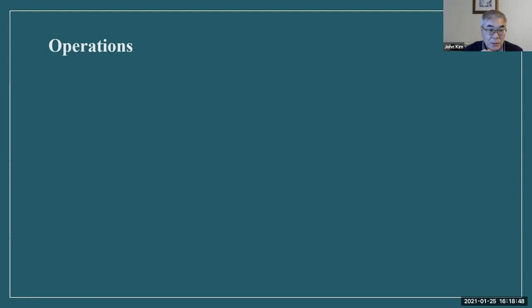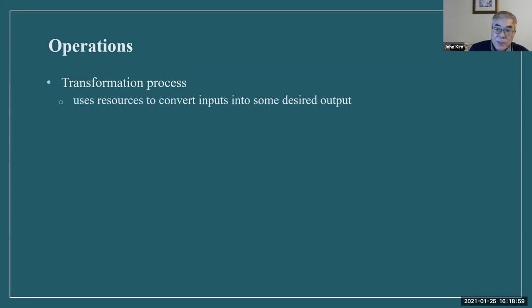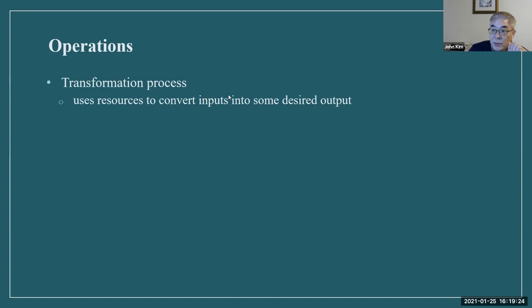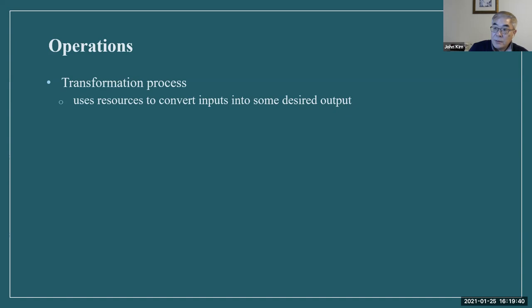Now define what operations is. Operations is a transformation process — using resources to convert inputs into some desired output. The transformation process has three parts: input, the process itself, and output. That is operations.